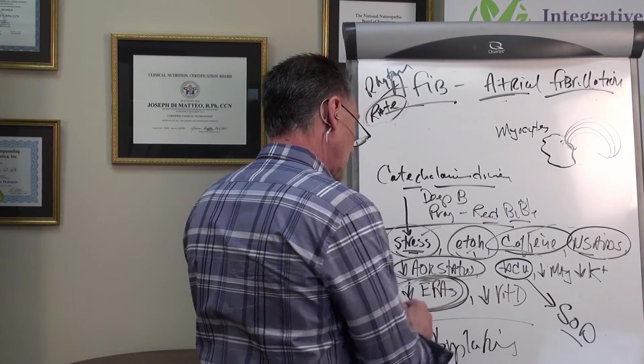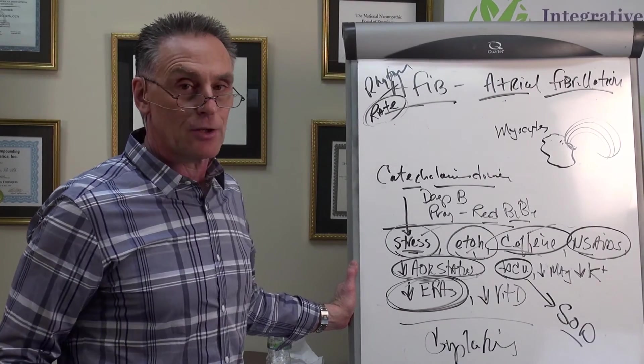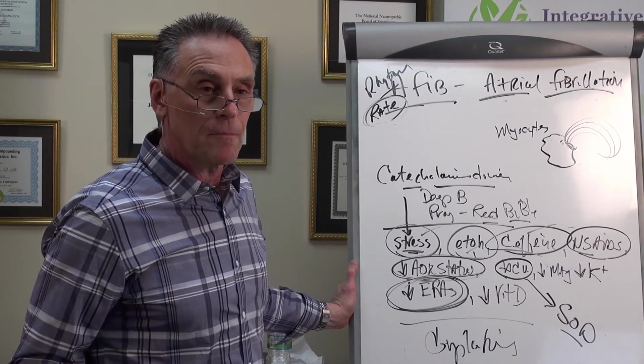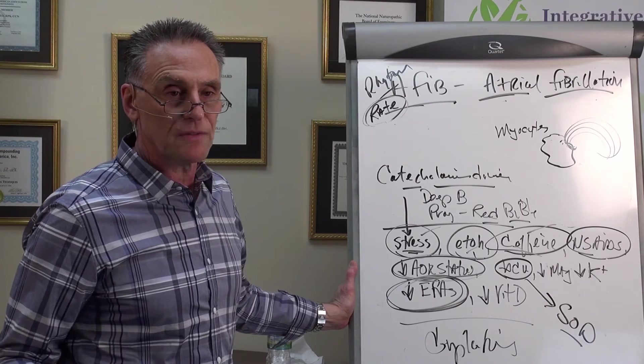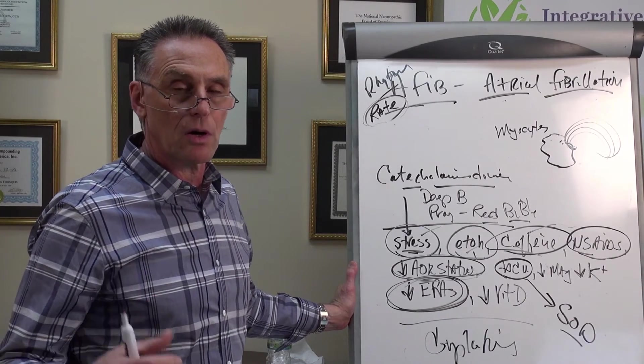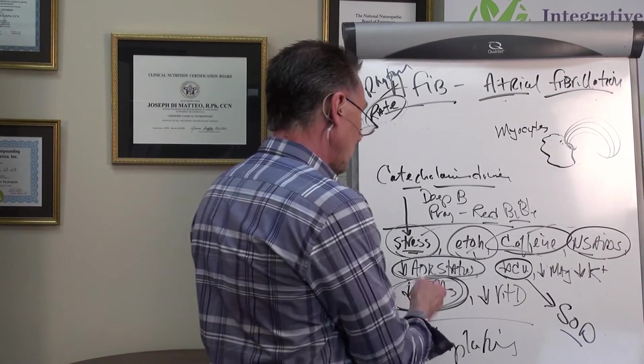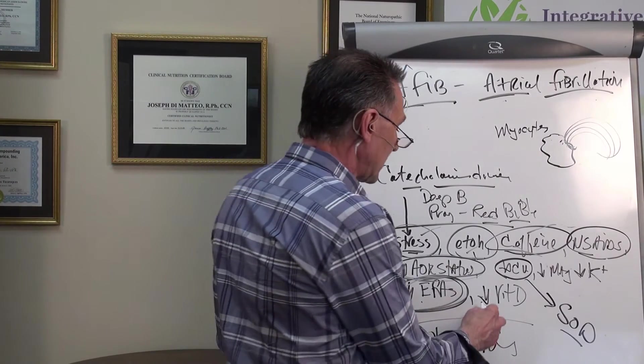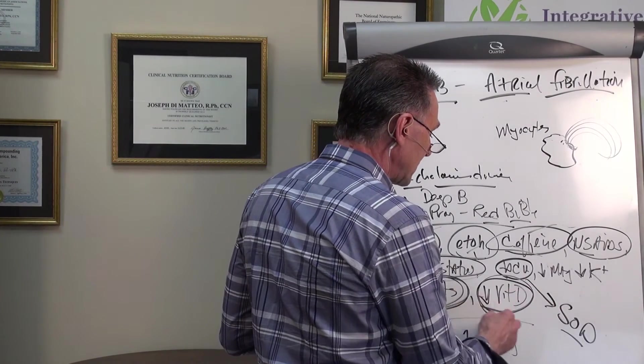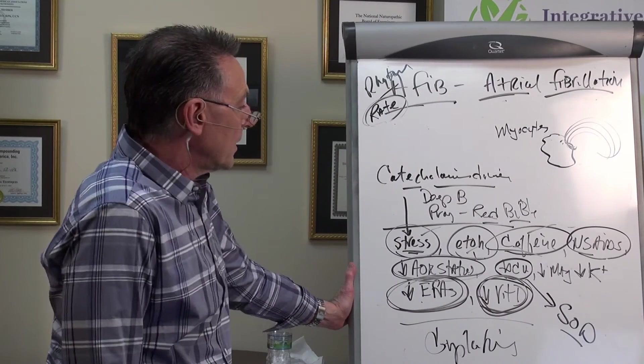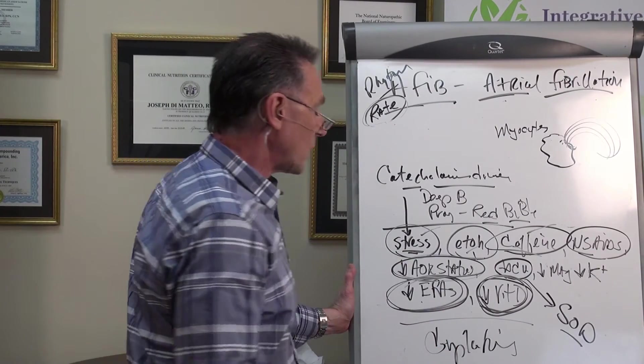You don't supplement with an absorbable form of magnesium. Low magnesium status can open the door. Low potassium status certainly can open the door. Low essential fatty acids. You don't eat fish. You don't eat good fats. You don't eat nuts and seeds. And you don't supplement with a good oil. Imbalanced essential fatty acid ratio in the heart muscle can open the door as well. Some literature showing lowered vitamin D status.